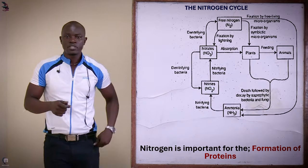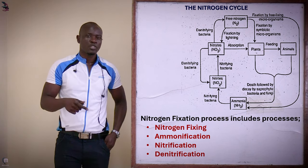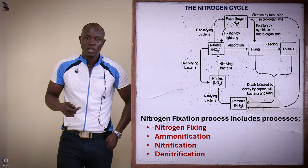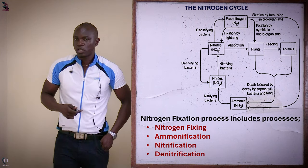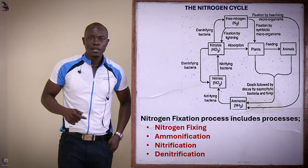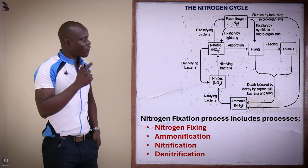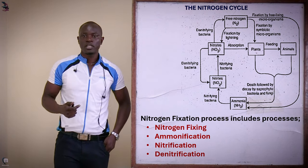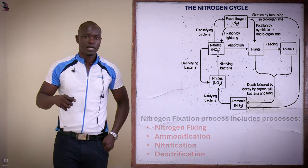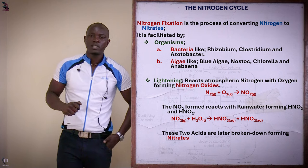The nitrogen cycle mainly involves different processes. The first process is nitrogen fixation, the next is ammonification, then nitrification, and then denitrification. As you can see in the diagram, we have arrows showing nitrogen into the atmosphere, ammonification, nitrification, denitrification, and then nitrogen can be taken up by plants or circulated straight back into the atmosphere.